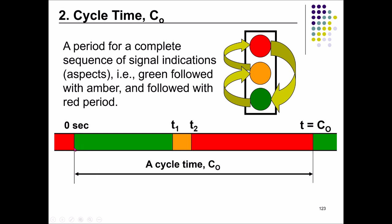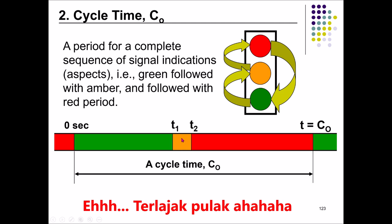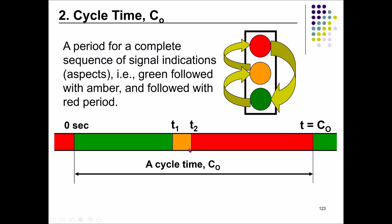The green period is the time during which vehicles can move. After green comes amber, which is normally about two to three seconds before changing to red. So from the beginning of green to the end of amber is one time segment, and from the beginning of red to the end of red is the red time. From the beginning of green until the end of red is one complete cycle time.